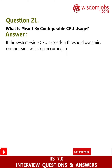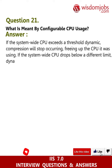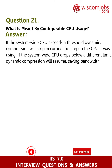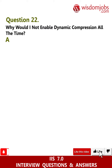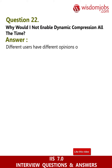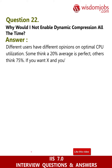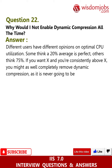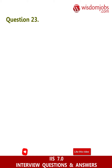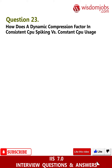Question 21: What is meant by configurable CPU usage? Answer: If the system-wide CPU exceeds a threshold, dynamic compression will stop occurring, reducing the CPU it was using. If the system-wide CPU drops below a different limit, dynamic compression will resume, saving bandwidth. Question 22: Why would I not enable dynamic compression all the time? Answer: Different users have different opinions on optimal CPU utilization — some think 20% average is perfect, others think 75%. If you want a target X and are consistently above X, you might as well completely remove dynamic compression as it will never be used.